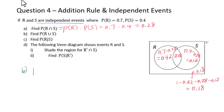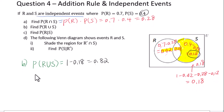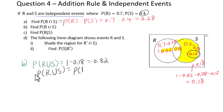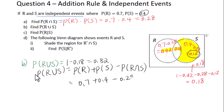For part b, find P(R ∪ S). We add the three regions together, or use 1 minus 0.18 equals 0.82. Alternatively, using the addition rule: P(R ∪ S) = P(R) + P(S) minus P(R ∩ S) = 0.7 plus 0.4 minus 0.28 = 0.82.